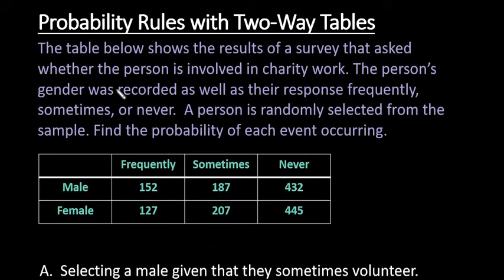For this video, I want to show you some probability rules with two-way tables. I'm going to go over several different rules including probabilities involving given, and, or, and the complement. The table below shows the results of a survey that asked whether the person is involved in charity work.